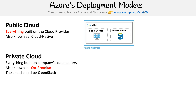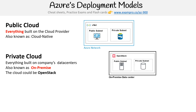Then we have private clouds. This is where everything is built on the company's data centers, also known as on-premise, because it's within the premises of the organization — like their physical location. An organization could technically be operating their own cloud, but it would be private cloud. They could be running some open source cloud software that mimics what Azure would do, such as OpenStack. So it looks very similar, but you just put OpenStack in there, and it's running a virtual machine or a server, and also a database.